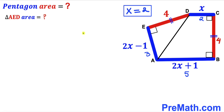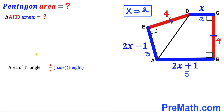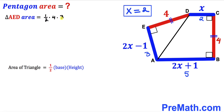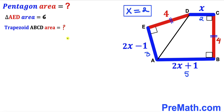For right triangle AED, we use the formula: Area = ½ × base × height. The base is 4 and the height is 3, so Area = ½ × 4 × 3 = 6 square units.